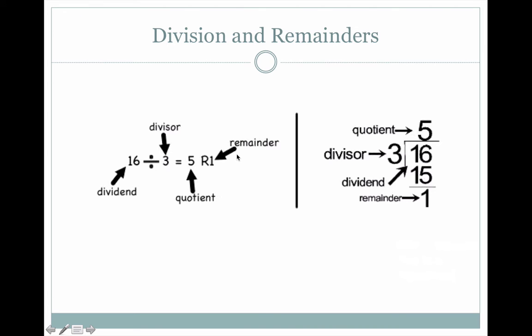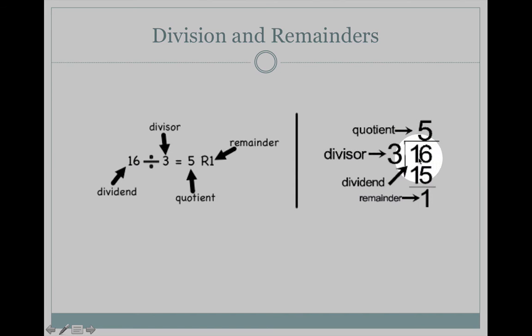When you write division using the standard algorithm, you also have the dividend, the number you're dividing, the divisor, which tells you the size of the groups or the number of groups, and the quotient, which is the answer. If there are objects left over, that gives you a remainder. How you interpret this remainder when you are problem solving is very important.